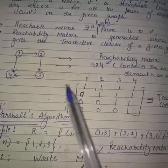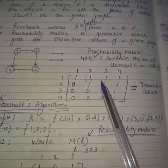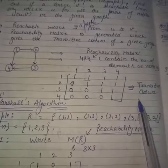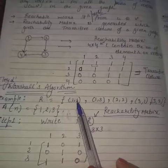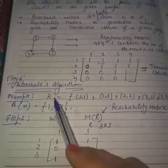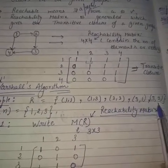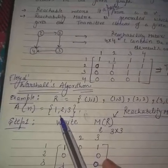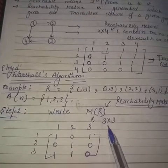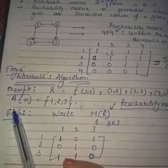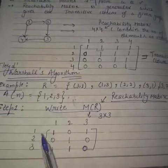To prove that a transitive closure exists for a given relation, we use Warshall's algorithm. The matrix we attain is the transitive closure of a given directed graph. For example, we are given the relation: {(1,1), (1,3), (2,2), (3,1), (3,2)}. The number of elements (vertices) given is three — 1, 2, 3 — so the matrix becomes 3×3. The first step of the algorithm is to write the reachability matrix M_R.